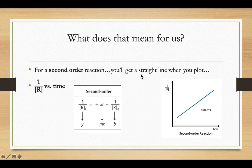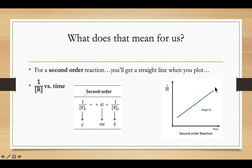For a second order reaction, you'll always get a straight line when you plot the inverse of the concentration versus time. On the y-axis there's our 1/R. As time progresses, the slope goes up the opposite direction, because as our reactants turn into products, reactant concentration goes down. Because we're plotting the inverse of concentration over time, that flips the sign — so on this equation, the slope is a positive K.